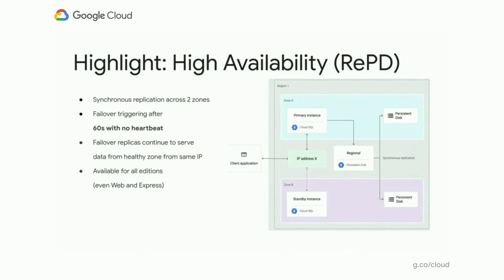Now let's talk about replicated persistent disk and how that feeds into high availability. In our HA configuration, it's a regional solution with two zones in the same region. Your primary instance — the compute instance — is joined to the persistent disk instance located in the same zone. That persistent disk instance is connected and replicating to the Zone B persistent disk instance and they're always kept in sync. Whenever you write to the primary instance, the write goes to both persistent disk instances before it's considered successful.